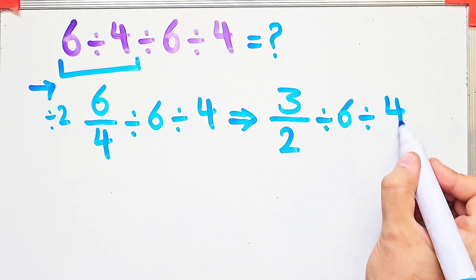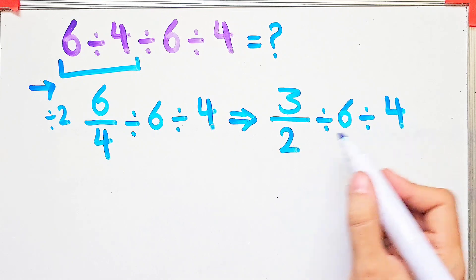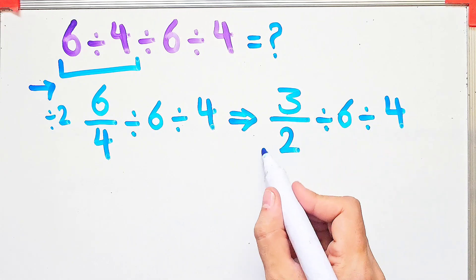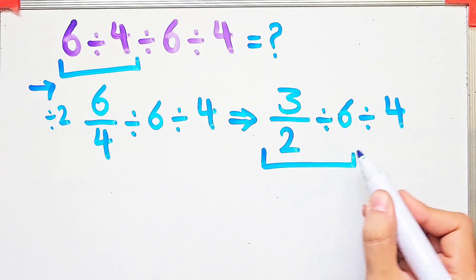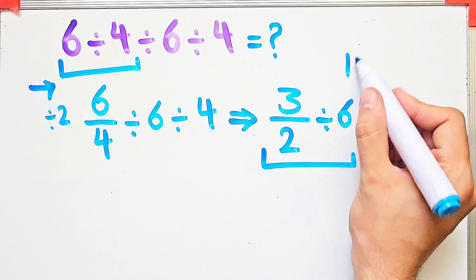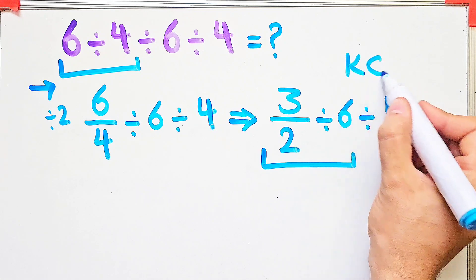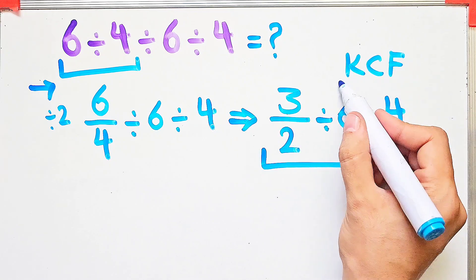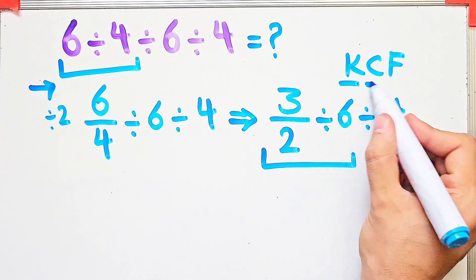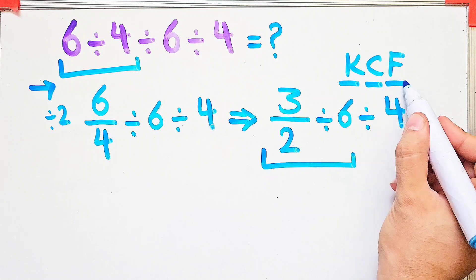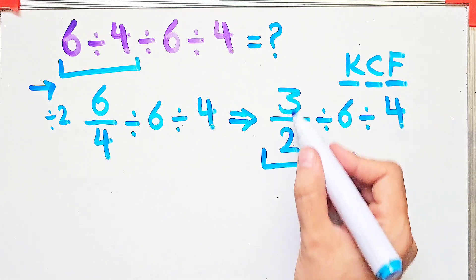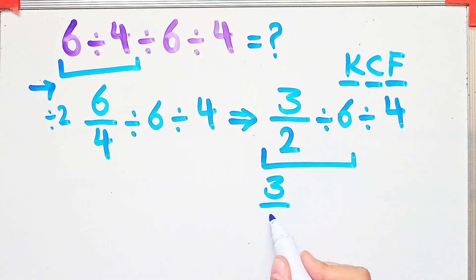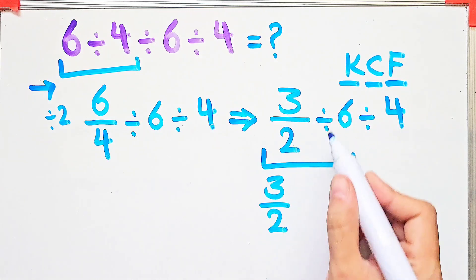To solve the first part, we need to follow the KCF rule. In this rule, K stands for Keep, C stands for Change, and F stands for Flip. We keep the first fraction as it is, then